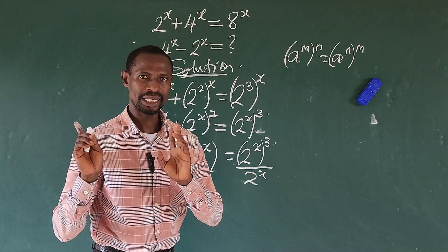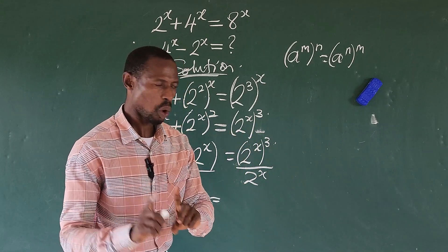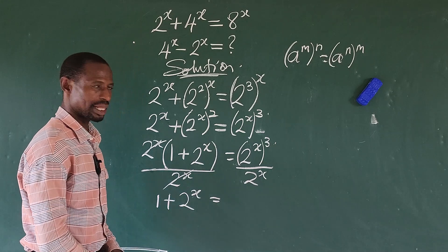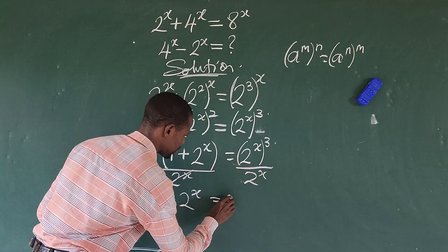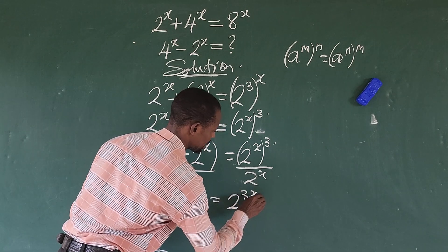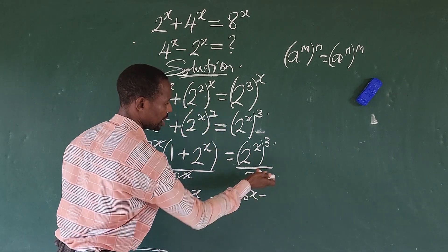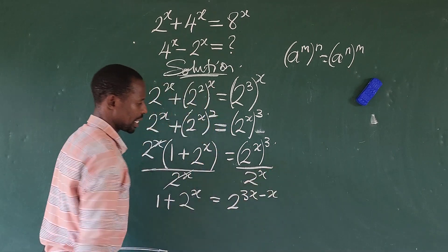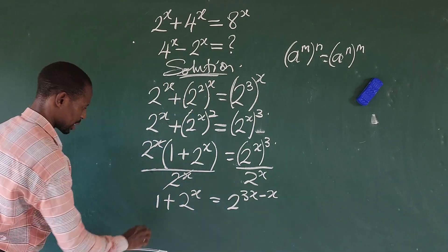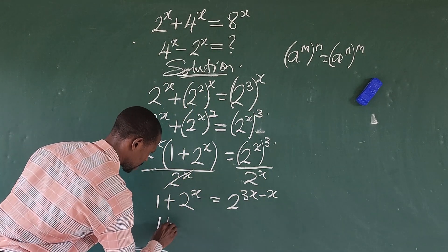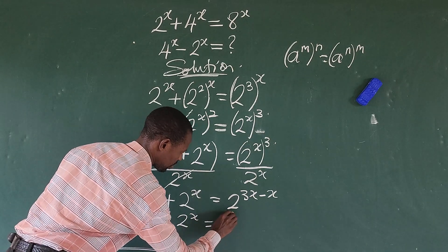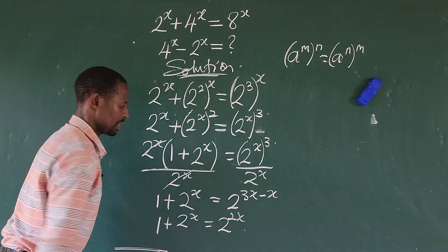then we apply the division law of indices. Since the bases are the same, we subtract the exponents, right? So this is going to give us 2 to the power of 3x minus x here. If we subtract this from this, we're going to get 2x. So we have 1 plus 2 to the power of x equals 2 to the power of 2x.